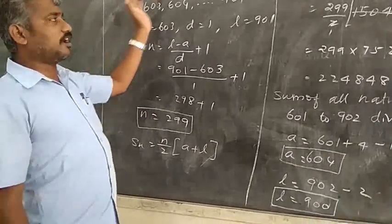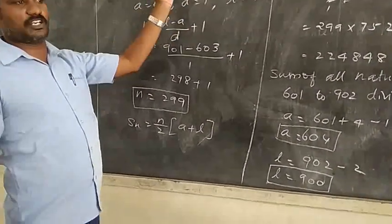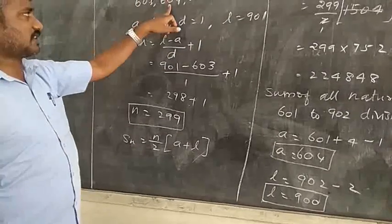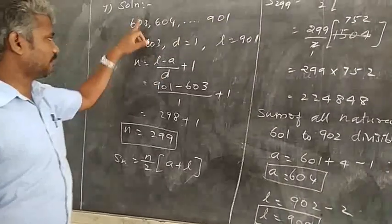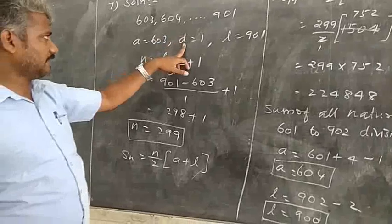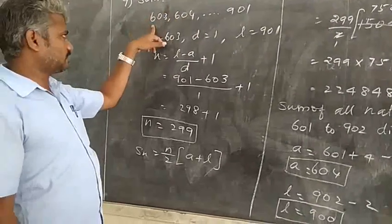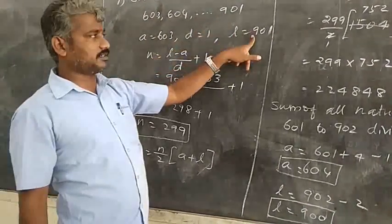Sum of all natural numbers between 602 and 902: 603, 604, etc., 901. So A value 603, D value 604 minus 603 equals 1, last term 901.